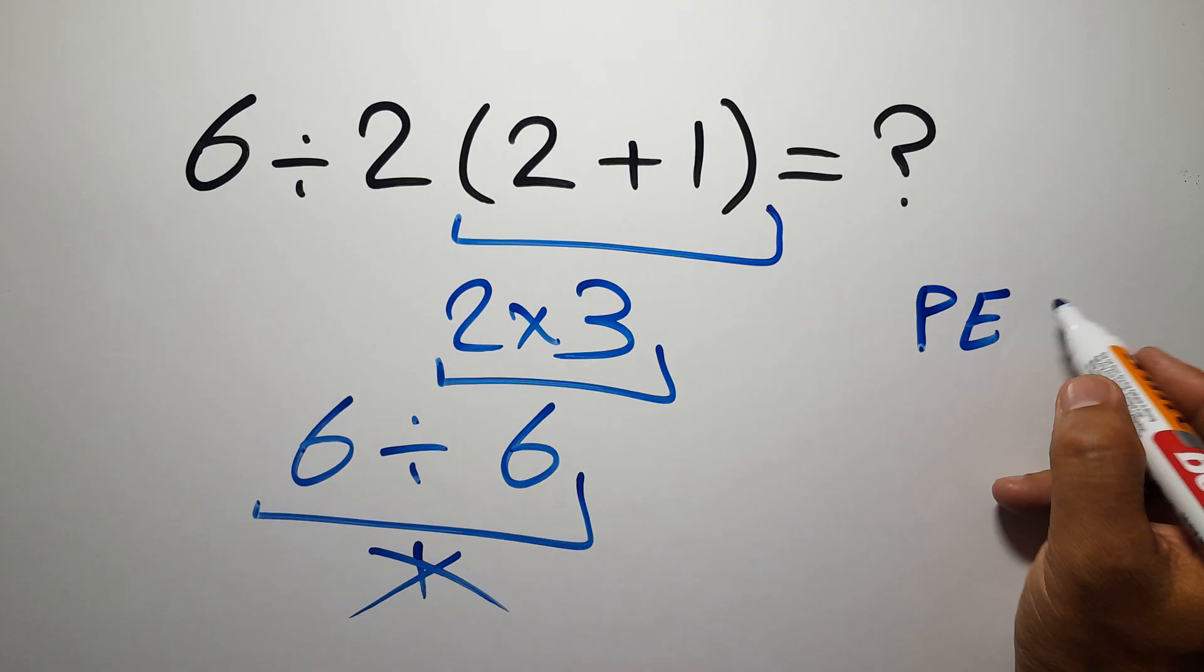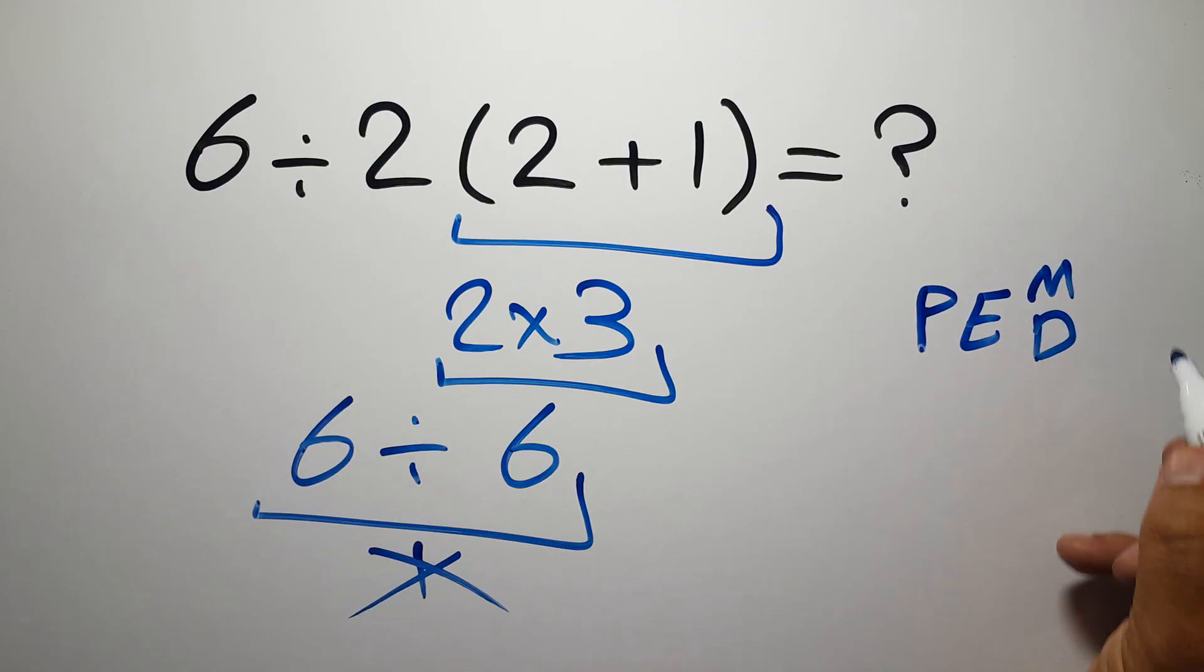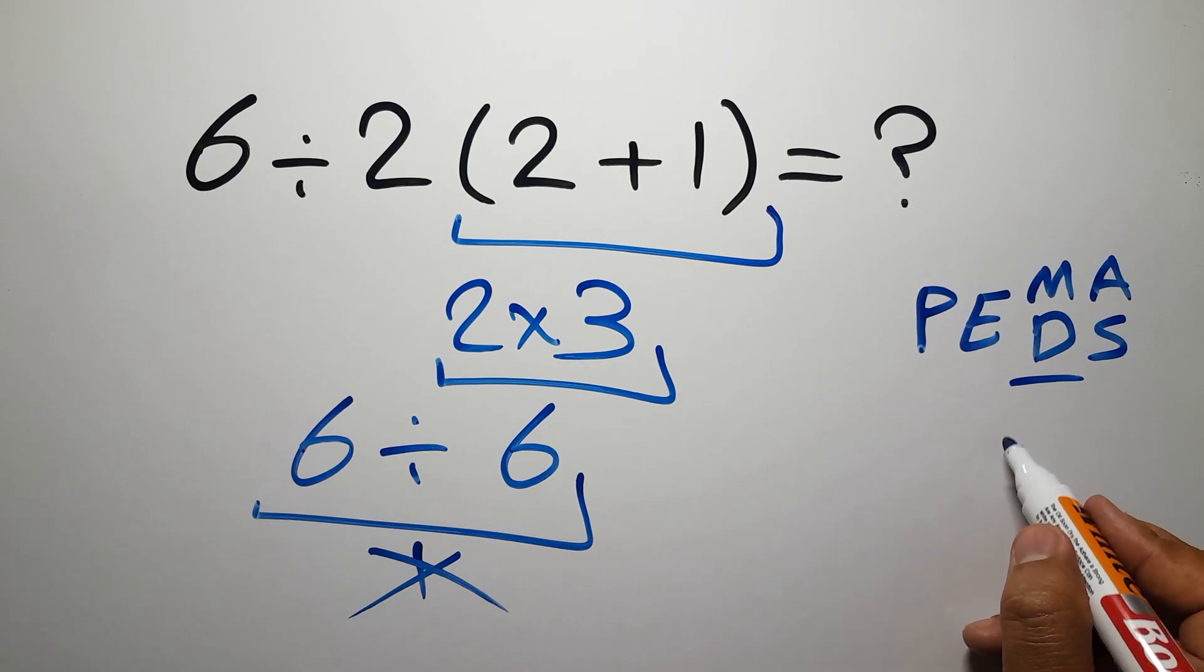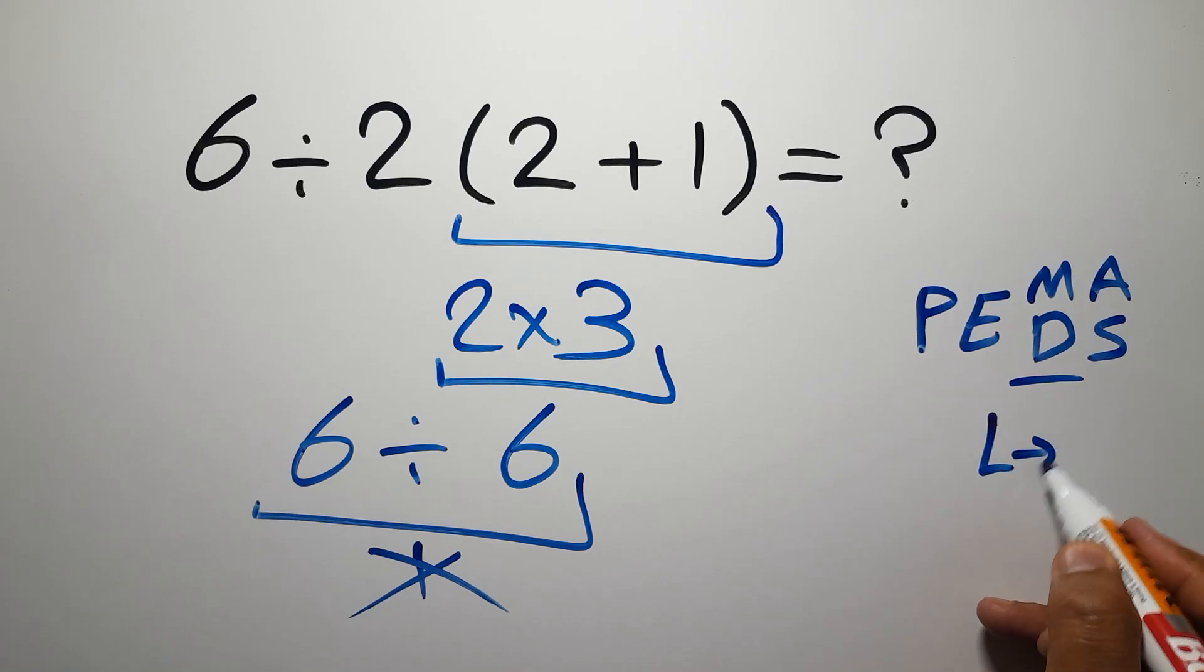Remember that multiplication and division have equal priority and we have to work from left to right. The same applies to addition and subtraction. In this expression, we have one division, one multiplication, and parentheses. Inside the parentheses we have one addition.